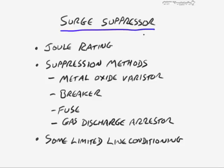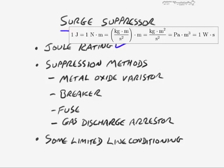Let's address surge suppressors. These are very important — they can also be called surge protectors, and for A+ exam purposes we can consider them the same. They protect against unexpected surges in electricity that could blow out the power supply or pass through to fry the motherboard, drives, or whatever is connected. Surge suppressors are normally rated in joules — the good ones say 500 joules or 1,000 joules. The joule is named after James Prescott Joule, and it's a measure of the work required to continuously produce one watt of power for one second.